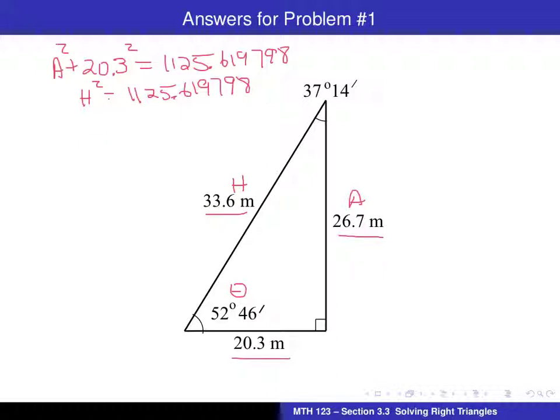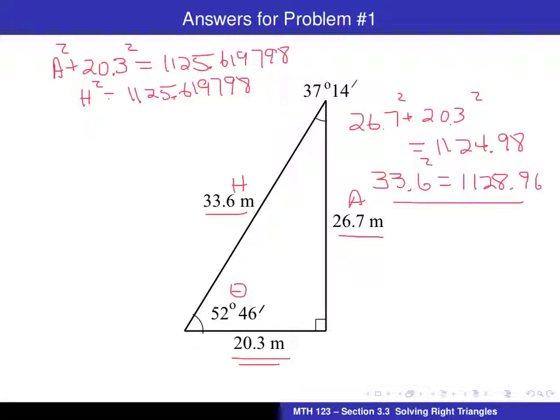Notice I could use the rounded values. If I use the rounded values, I would do 26.7 squared plus 20.3 squared. If you do that on the calculator, it will come out to be 1124.98. And then the hypotenuse squared, using the rounded value of 33.6 squared, comes out to be 1128.96. That is not a perfect check. It probably indicates at least that I'm close to the correct answer and probably am correct. But this here is a much nicer check. It really makes it certain that we've got the correct answer there.